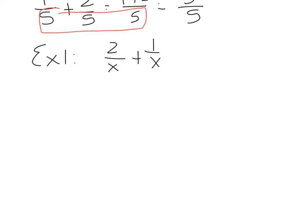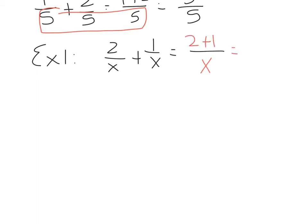Example 1 on page 150 says 2 over x plus 1 over x. Do not forget that the denominators always end up being the same. A lot of students are tempted to make this 2x or x squared, but this is x, this is x, this will also be x over here. And then in the numerator, we will just add the like terms: 2 plus 1, which are like terms, so this turns into 3 over x.